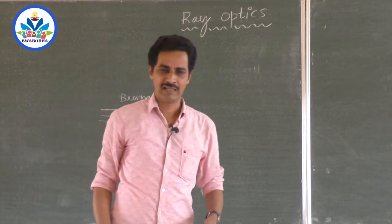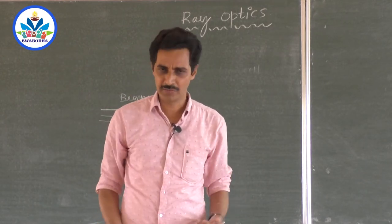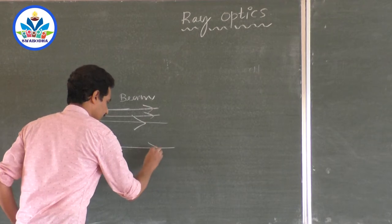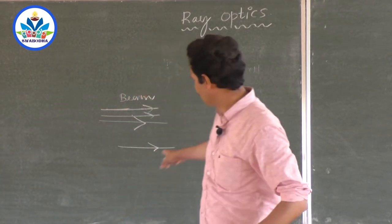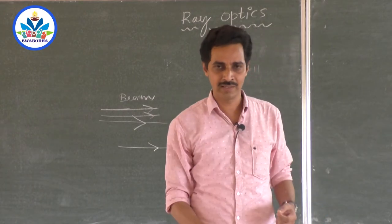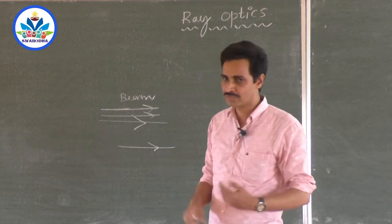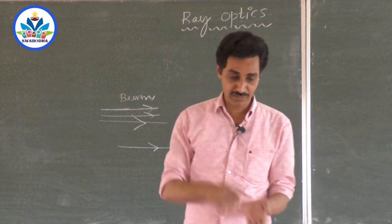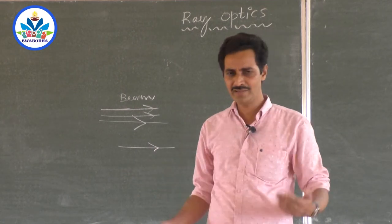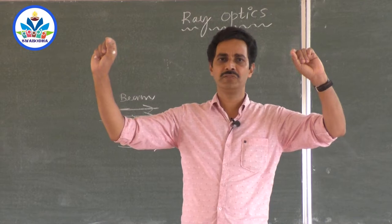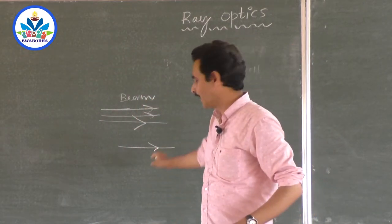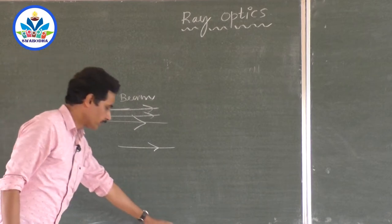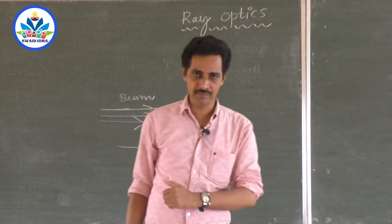A ray is a thin beam — as thin as possible. A straight line with an arrow represents a ray of light. For us a certain thickness is enough to call it a ray, but for an ant the same line might appear as a beam. So a ray is the path of light represented in a diagram by a straight line with an arrow.